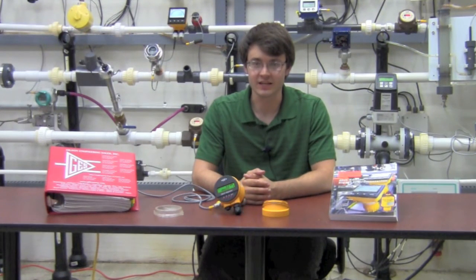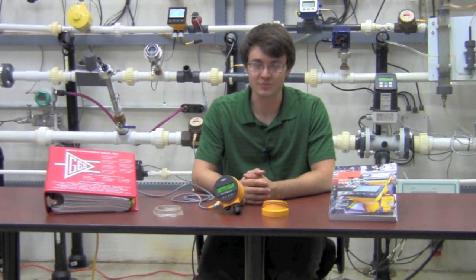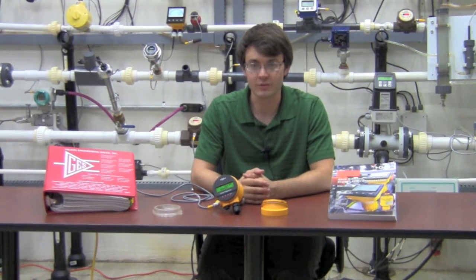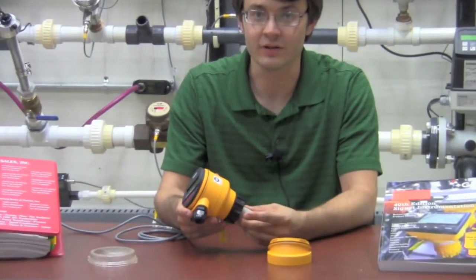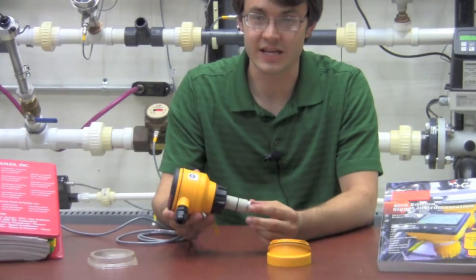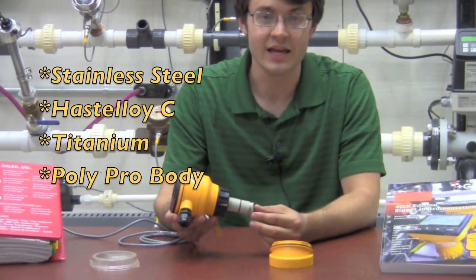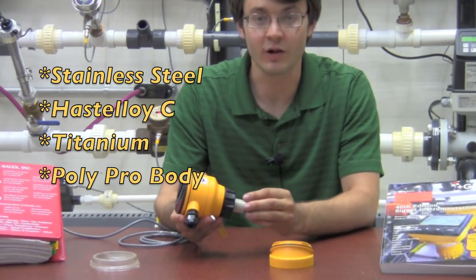The features of the Cygnet 2551 Insertion Magnetic Flow Meter are no moving parts, a very low pressure drop across the element, along with excellent chemical compatibility. We offer our meter with stainless steel, Hastelloy C, and titanium electrodes with a polypropylene body.